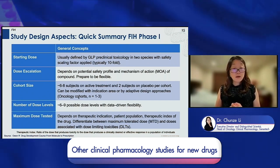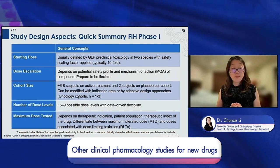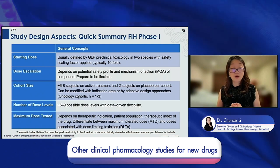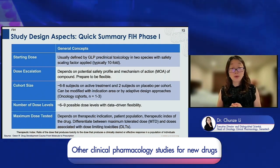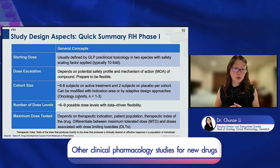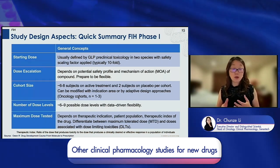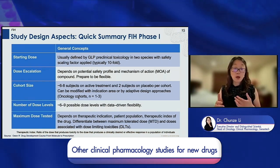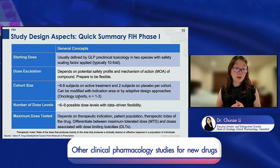For the cohort size in the first human study, it's usually not that big — around six to eight subjects on active treatment and two subjects on placebo treatment per cohort. We can also modify it based on the indication. For example, for oncology dose escalation, we usually only have one to three patients, depending on the dose level.